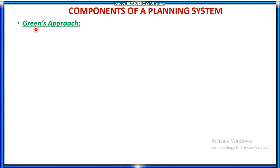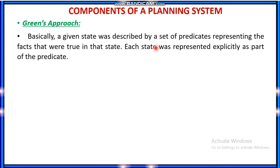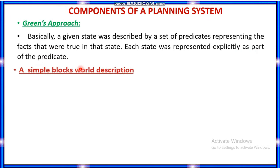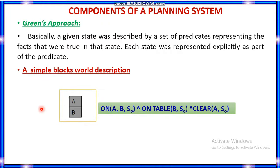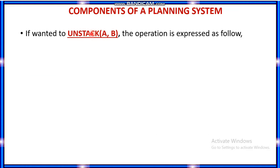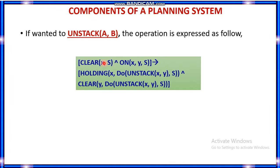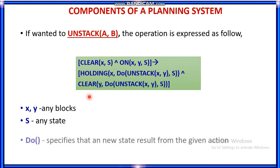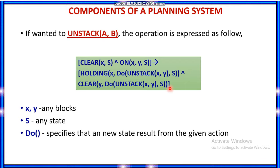One method is Green's approach. In Green's approach, a given state is described with a set of predicates representing the facts that are true in that state, and each state is represented explicitly as part of the predicate. For example, in a simple blocks world description, on(A, B, S1) means A is on B in state S1; onTable(B, S1) means B is on the table in state S1; and clear(A, S1) means no block is on block A. To perform unstack(A, B), you need clear(x, s) and on(x, y, s), which transitions to another state using a do-function that specifies the new state from the given action.